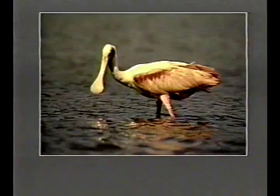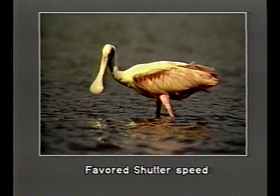Let's look at a few slides. This is Turret Arch in Arches National Park in Utah — here I've favored depth of field over shutter speed. This spoonbill photograph taken in Ding Darling National Wildlife Refuge in Florida is the reverse. Instead of favoring depth of field, I've favored shutter speed. I shot Fuji Chrome 100 at a thousandth at F-5.6.